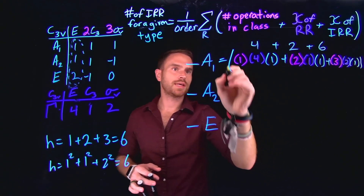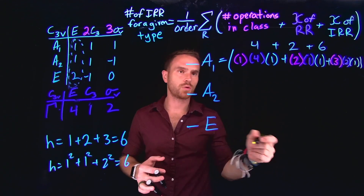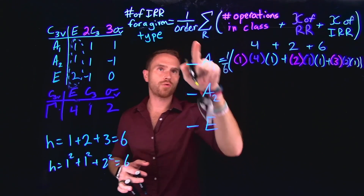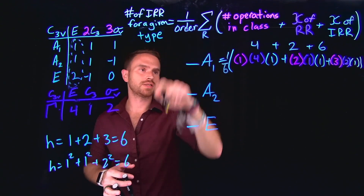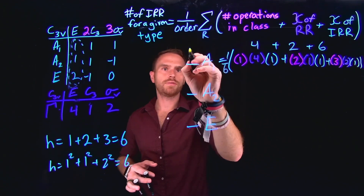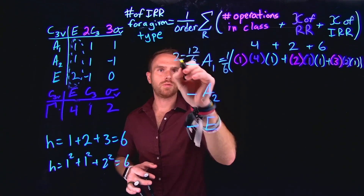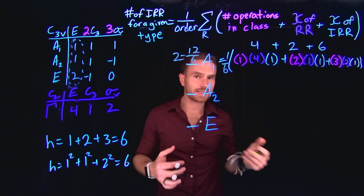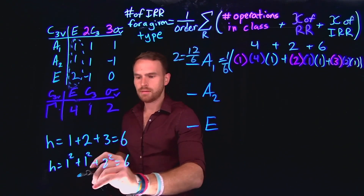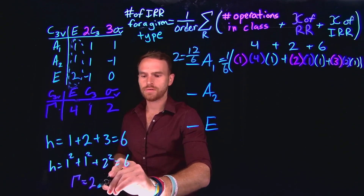Performing this calculation: 1 times 4 times 1 is 4, plus 2 times 1 times 1 is 2, plus 3 times 2 times 1 is 6. So this gives us 4 plus 2 plus 6, which is a total of 12. Remember, in front of all of these we have 1 over the order, which is 6. So 12 divided by 6 equals 2. This tells me that my reducible representation is made up of at least 2 A1s.